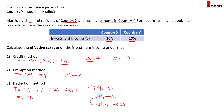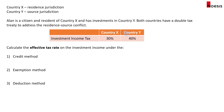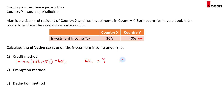Now let's change the figure: country Y's tax rate on investment income increases to 40%. Under the credit method, we again take the higher of the two rates — 30% and 40% — so the effective tax rate is 40%. All 40% is paid to country Y, and since it exceeds country X's rate, Alan pays nothing to country X. This effectively eliminates double taxation.